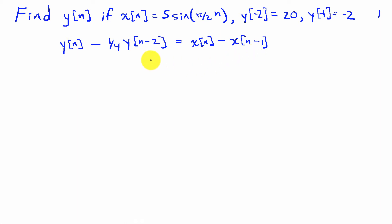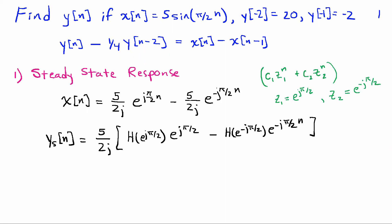This system has order N = 2 because that's the maximum delay involving the output variable y[n]. The output consists of two terms: a steady-state response, which is the response of the system to the input signal under steady-state conditions, and the transient response, which is the response associated with the initial conditions.